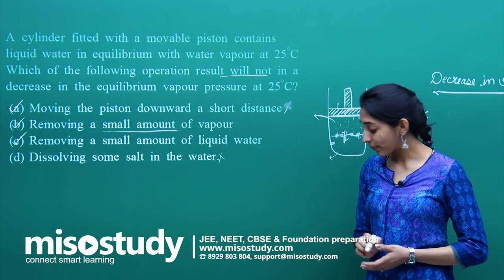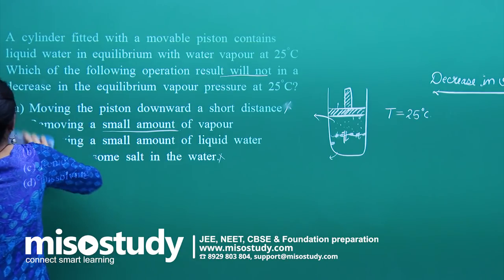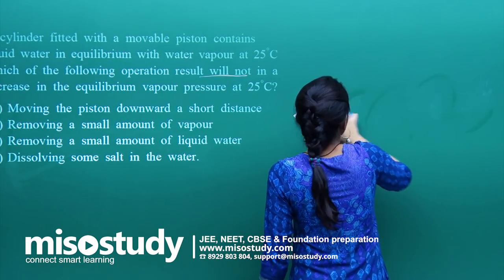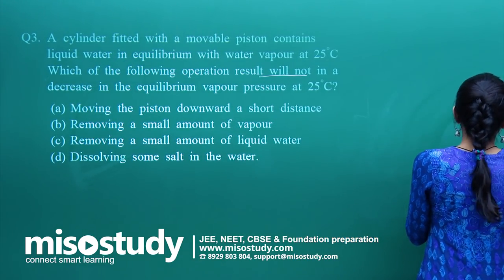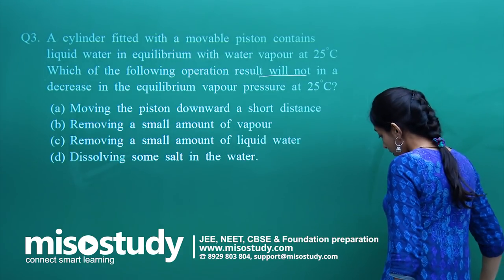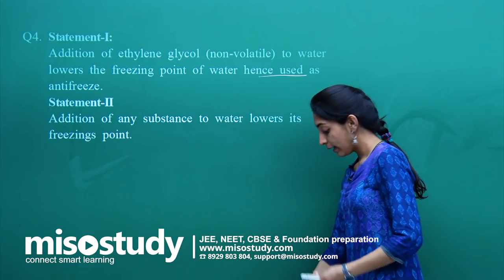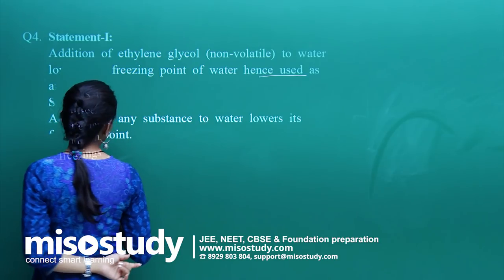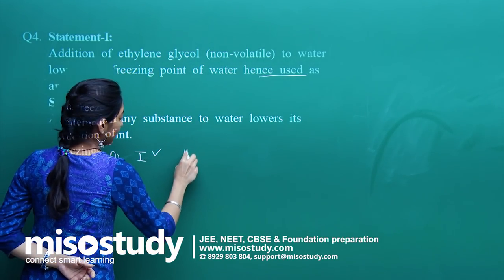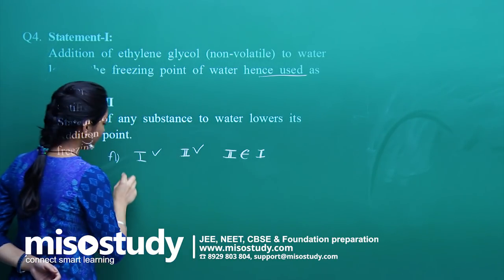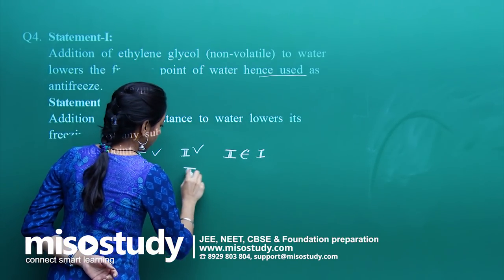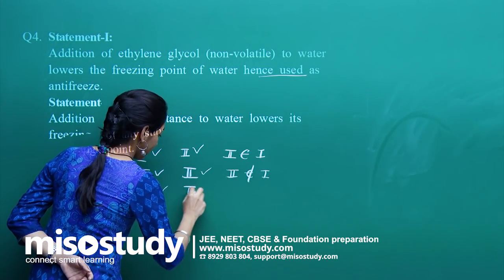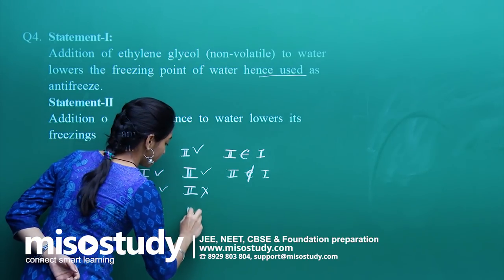That was an easy one but the question was tricky — it was asked in the opposite fashion. If you misread the question you would have written D as the correct answer. Moving on to Question 4, a statement type question. Option A: statement 1 correct, statement 2 correct, and 2 is the correct explanation of 1. Option B: both correct but 2 is not the correct explanation of 1. Option C: statement 1 correct, statement 2 false.